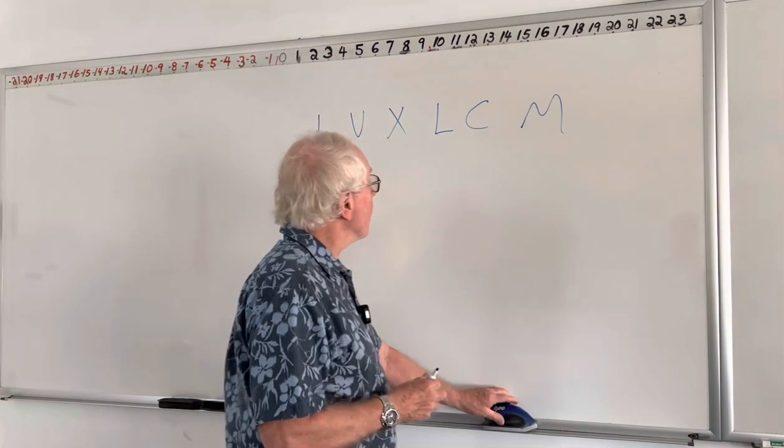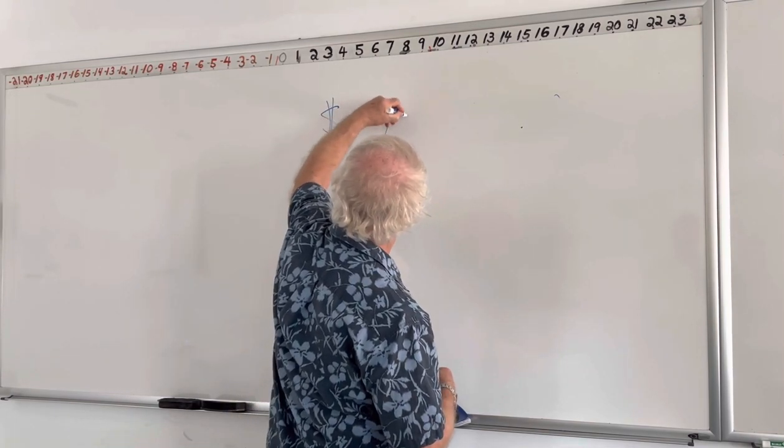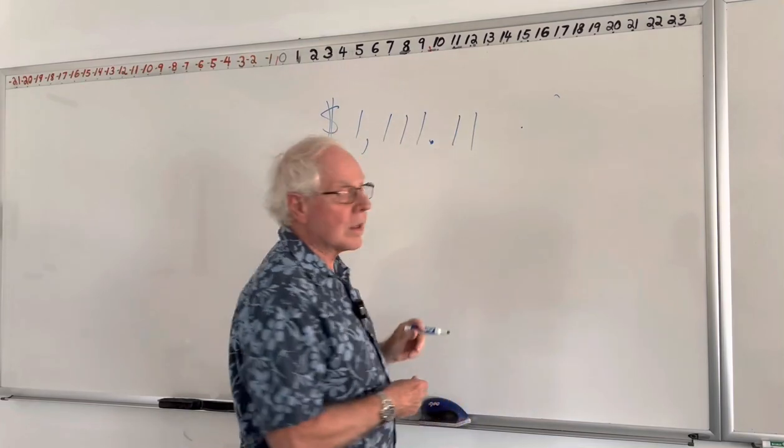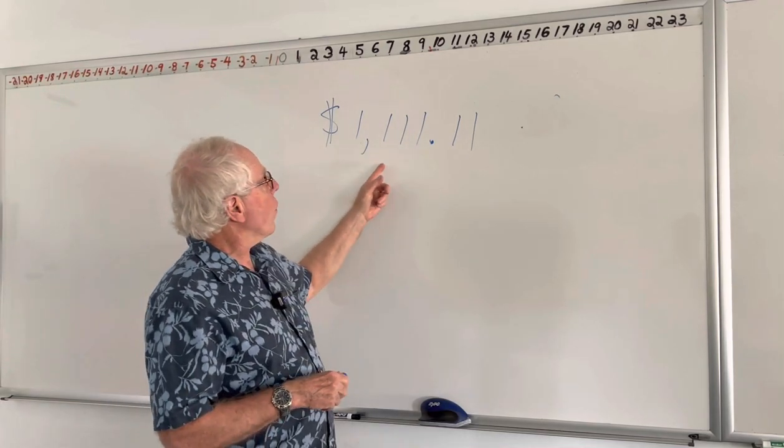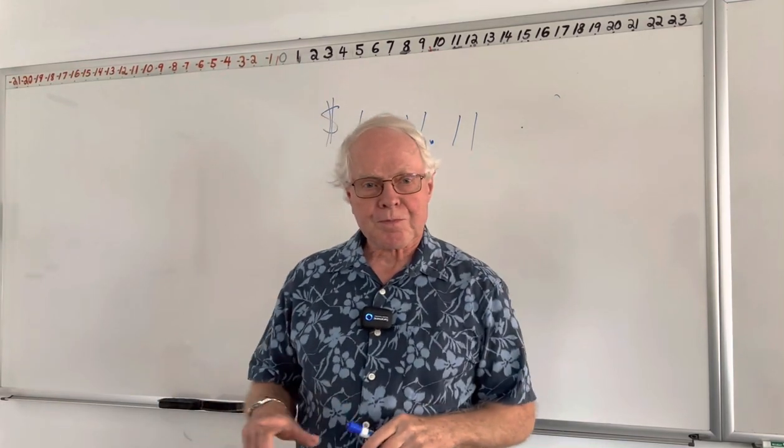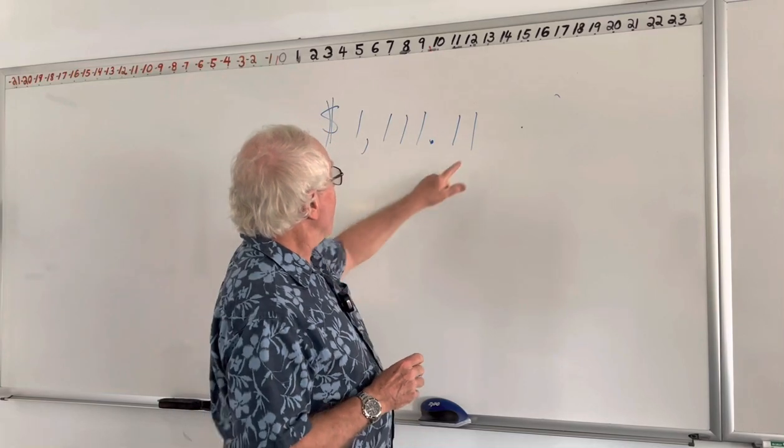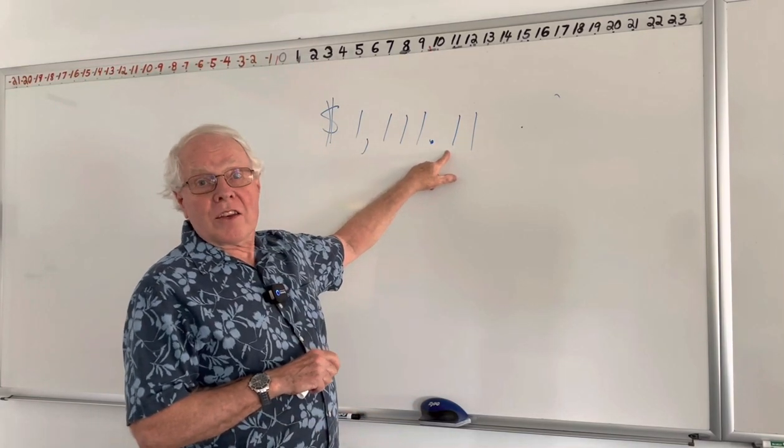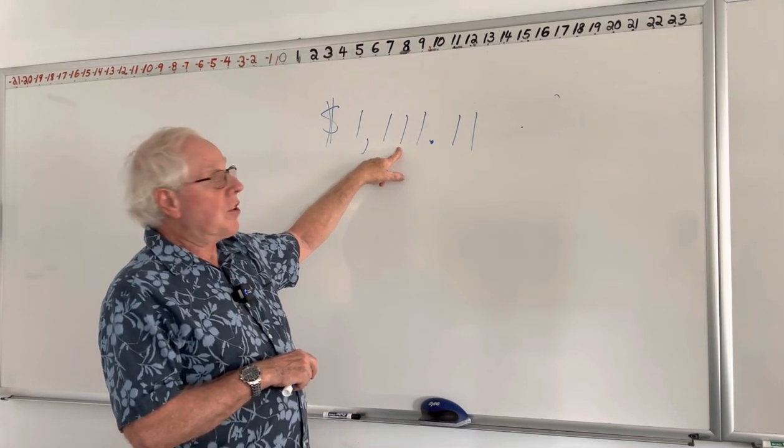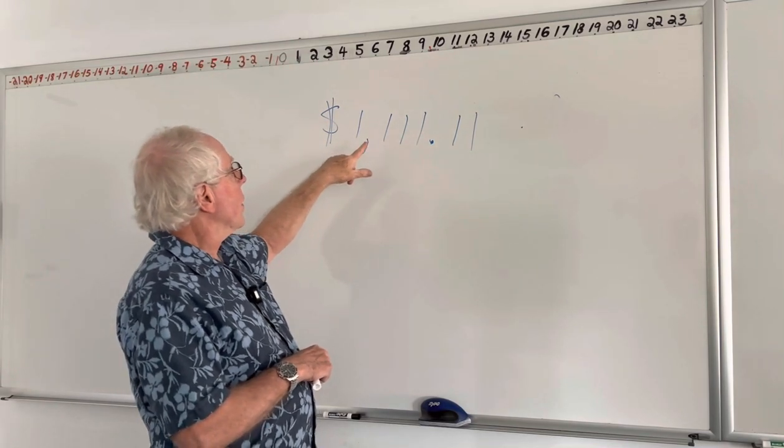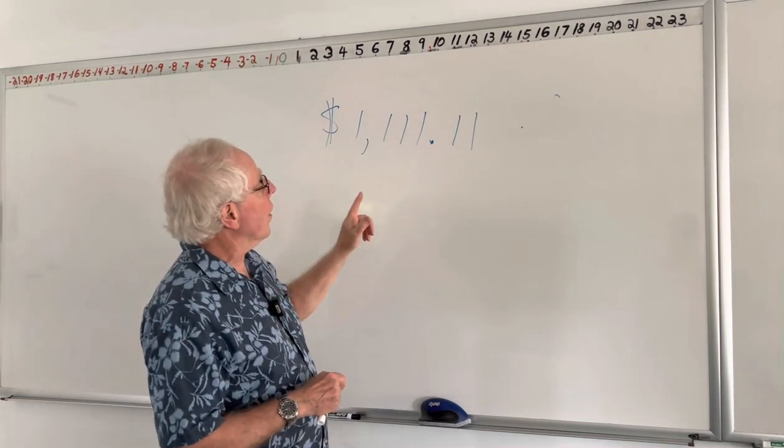So let's look at a number here. I like to use money whenever we can because we know money pretty well. So this is $1,111.11. As we move from right to left, each digit is 10 times bigger than the previous digit. So if this is money and this is a $1 bill, this is a $10 bill, $100 bill, $1,000 bill, and so on. Same numbers, but each one is 10 times more valuable.